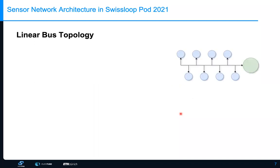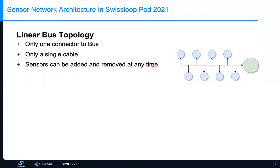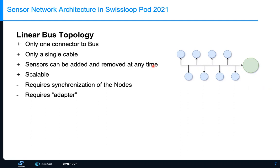A better topology for my thesis is the linear bus topology, where a single cable connects everything. The advantage is that you only need one connector to the bus for every node, and you have a single cable from the front to the back of the vehicle. You can add or remove sensors at any time by just plugging into that cable, and it is scalable to a few dozen sensors without messy wiring. The downside is that it requires synchronization of the nodes, since only one sensor can send data at a time.